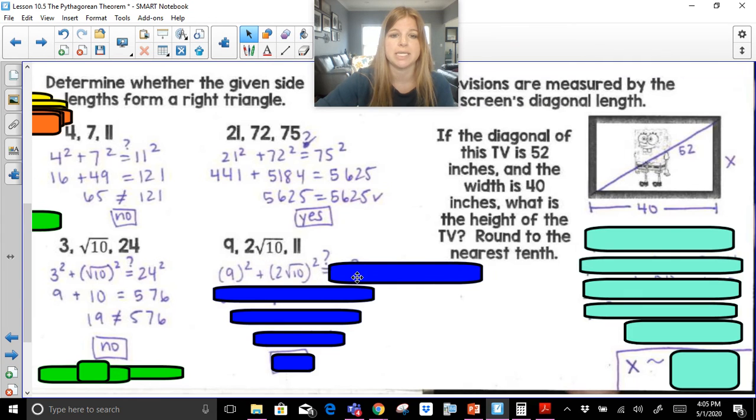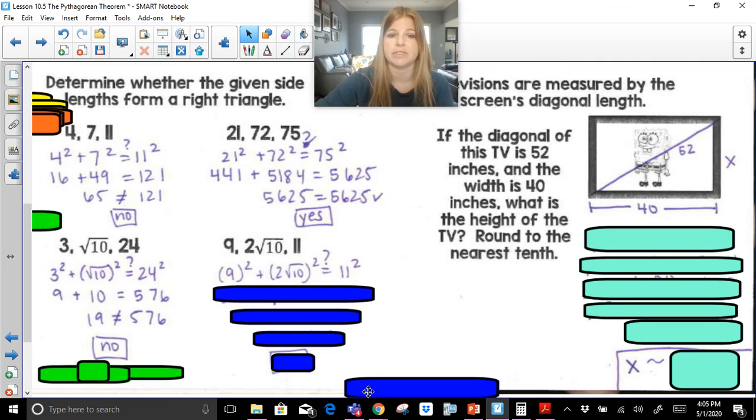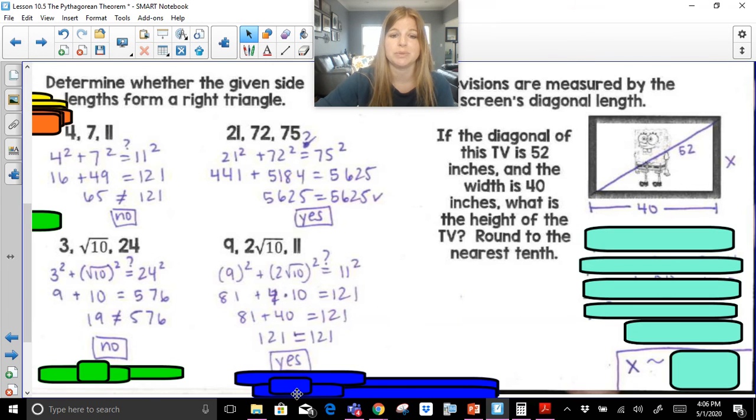And the last one, 9 squared plus 2 radical 10 squared, we want to check does it equal 11 squared. So 9 squared is 81, we square the 2, that's 4, we square the square root of 10, which is 10. 81 plus 40 is 121, and yes, it is a right triangle.